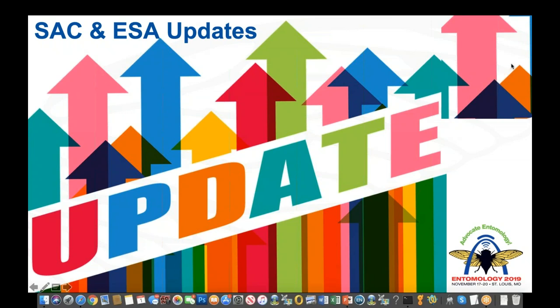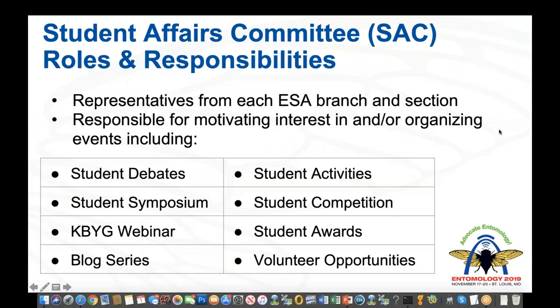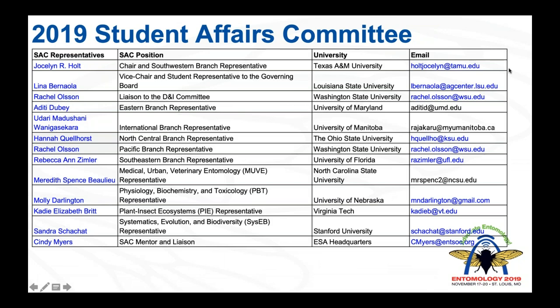We have a few updates from the Student Affairs Committee, as well as ESA, before we go over the activities you can participate in during our annual meeting. The Student Affairs Committee is composed of representatives from each ESA branch and section, and we are responsible for helping motivate interest in student activities and helping organize events. For the 2019 Student Affairs Committee, you can see all of your representatives listed here — make sure to keep that in mind when thinking of who represents you at the annual meeting.